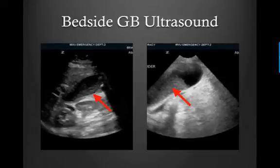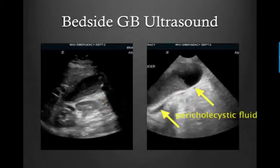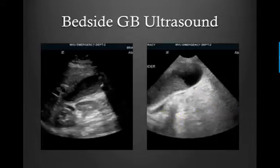Here are a few examples of sludge within the gallbladder. The gallbladder on the right also has some thickened wall and pericholecystic fluid.